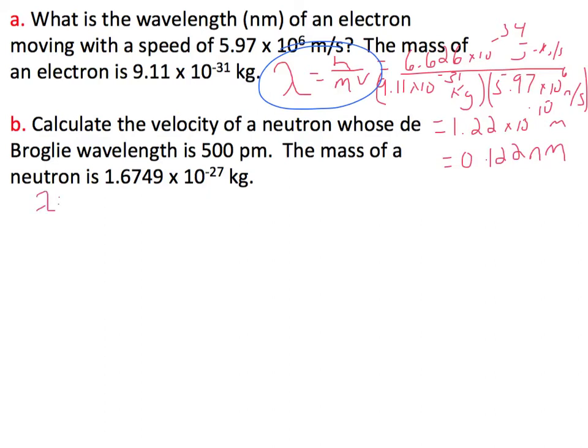and the wavelength that we're given is equal to 500 picometers, so we need to convert that to meters, and that's times 10 to the minus 12 meters, and 1 picometer, and so we get 5 times 10 to the minus 10th meters.